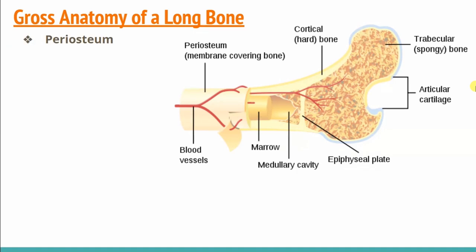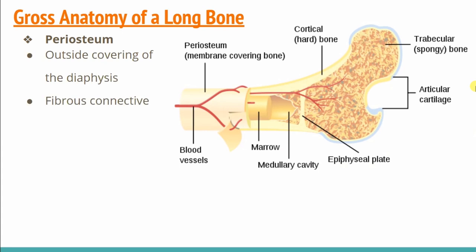First, we have periosteum. Periosteum is called the outer layering. This outer cover is called periosteum — you can see the periosteum membrane covering here. Whatever we call the outer covering, this is called periosteum. This is a fibrous connection, a tissue membrane, a fibrous membrane, and we call it Sharpey's fibrous.